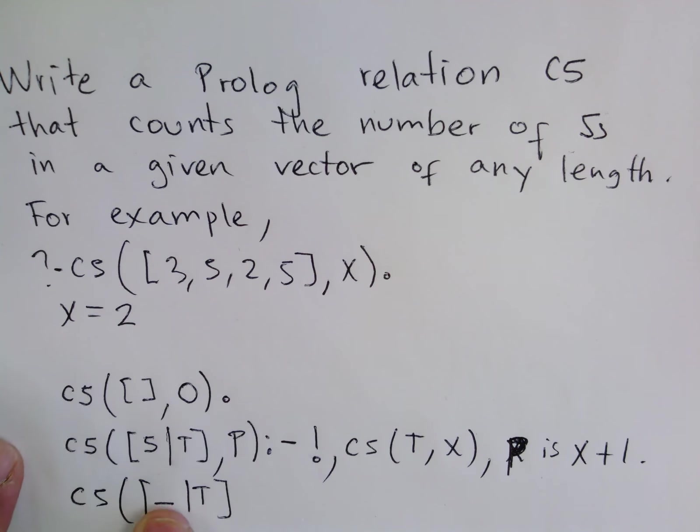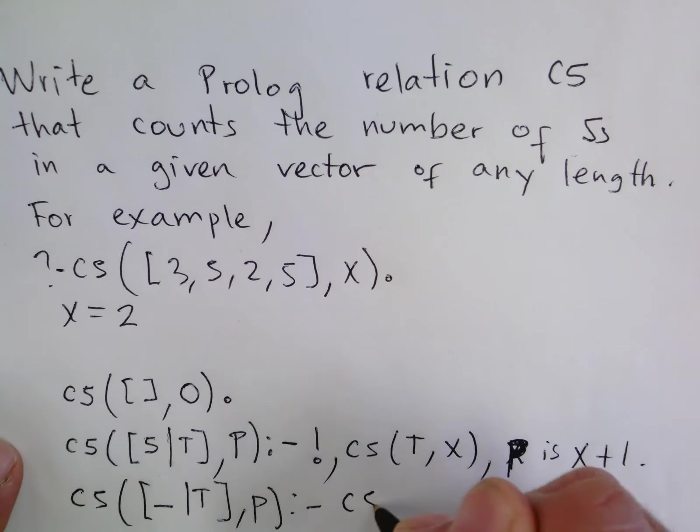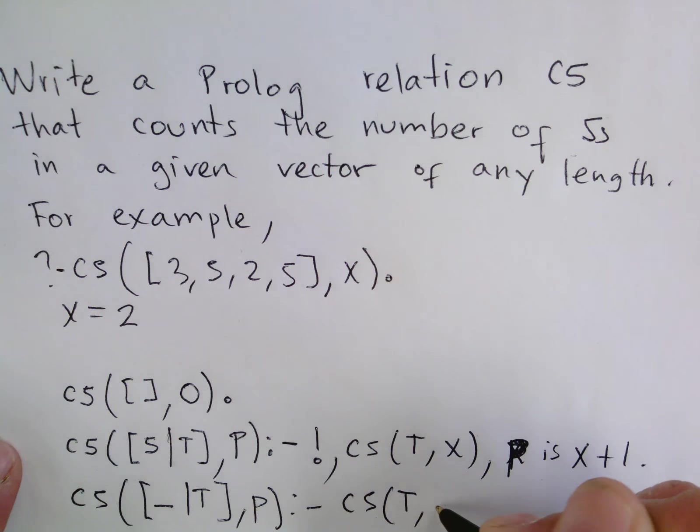I still count the rest. I know it's not empty, so at least there is something else. Then I got the P. And then in this case, I just do cs T comma P.